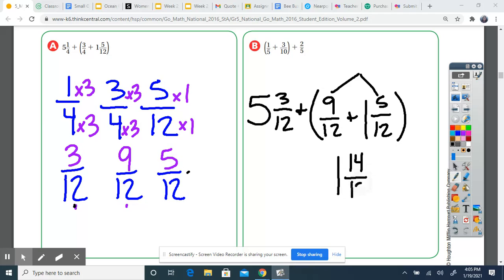So now I have one and 14 over 12. This is an improper fraction, so we need to convert that into a mixed number and then combine it back with this one. So 12 goes into 14 one time. How many is left over? Two. Put it over my original denominator. So I'm going to combine this one with this one and two twelfths. That gives me two and two twelfths.